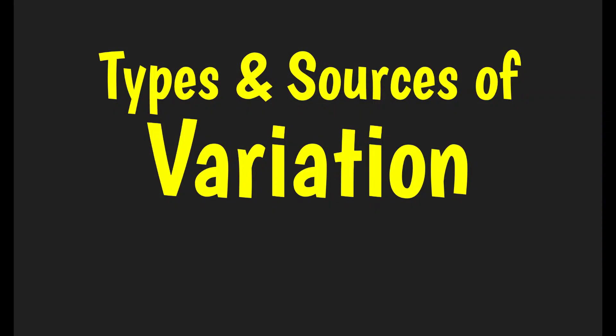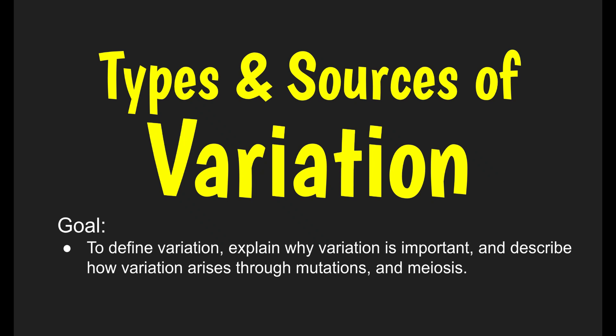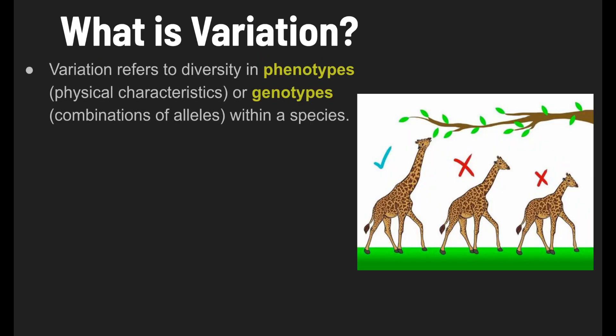Today we're going to talk about types and sources of variation. The goal of this video is to define variation, explain why variation is important, and describe how variation arises through mutations and sexual reproduction, specifically the process of meiosis. Variation refers to diversity in phenotypes, which would be physical characteristics, or genotypes, which would be the combination of alleles within a species.